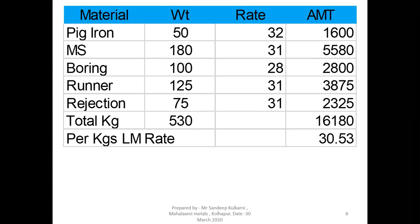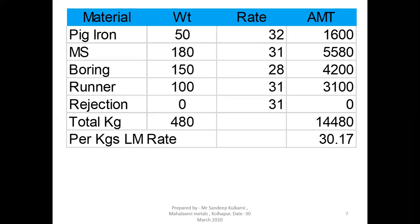In the third case, boring is now 100 kg and runner risers together with rejection is 200 kg — the cost is 30 rupees 53 paisa. In the fourth case, boring is 150 kg whereas rejection and runner riser is 100 kg, and the cost comes to 30 rupees 17 paisa.